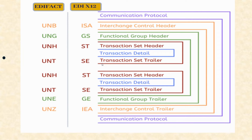In this slide we can see the EDI 850 communication protocol. The EDIFACT standard uses envelope segments UNB, UNG, UNH, UNT, UNE, while the EDI X12 standard uses ISA, GS, ST, GE, and IEA as its communication protocol segments.